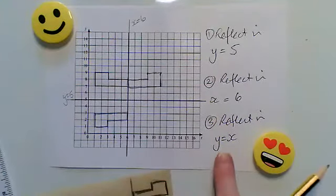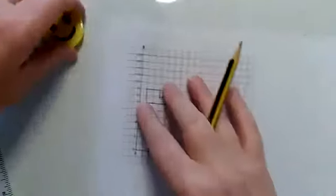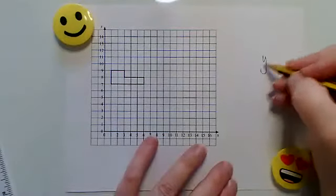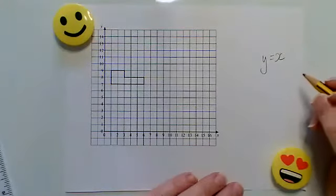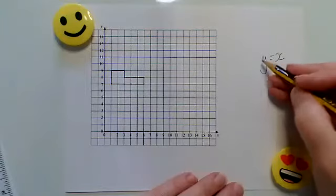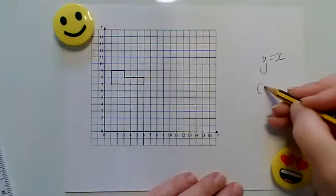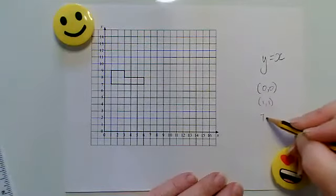Finally, I need to reflect this shape in the line y equals x, so I'm going to do that on a separate sheet otherwise this gets a little bit too busy. So I want to draw the line y equals x. If you can't remember how to draw that line, every y-coordinate is the same as the x-coordinate, so this line will go through 0,0, 1,1, 7,7, 15,15, and so on.